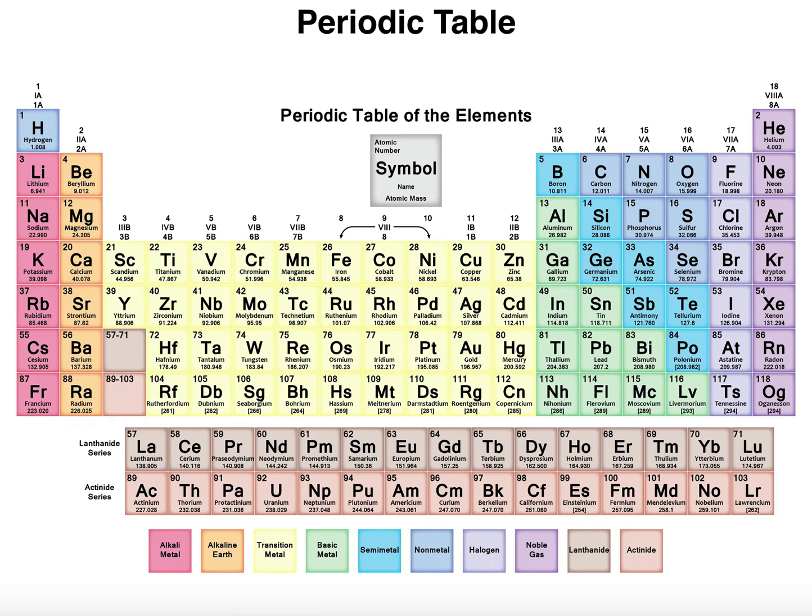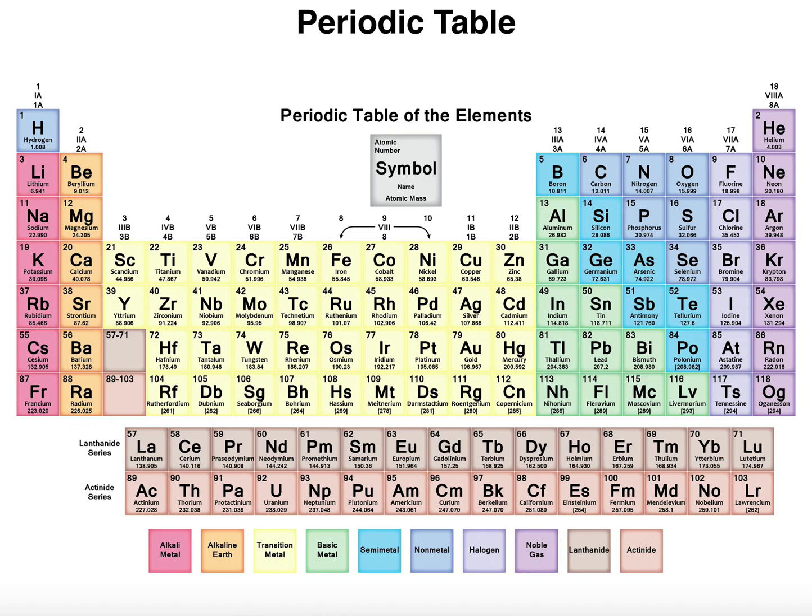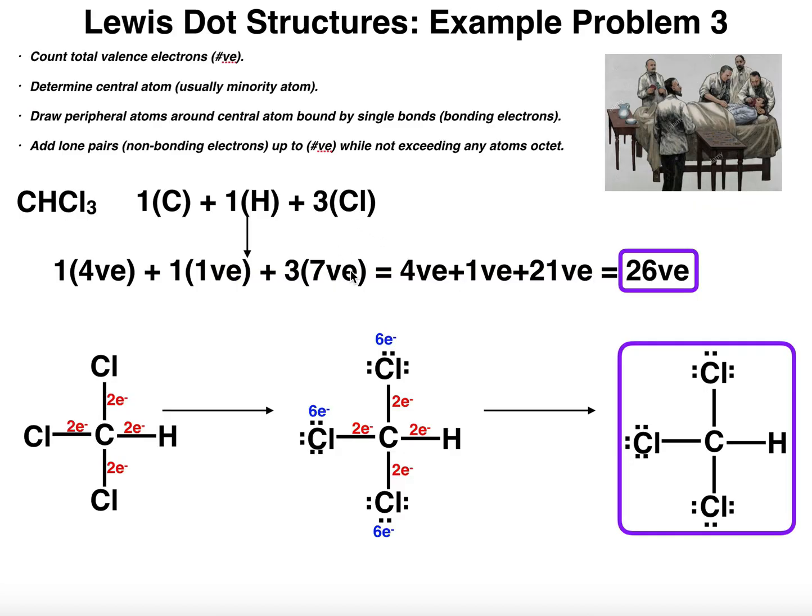Hydrogen is all the way over in group one on the left. So hydrogen's easy, that's just one valence electron. There's one of them, so one valence electron. And then each of these three chlorine atoms, chlorine is in group seven, so it's going to have seven valence electrons per chlorine.